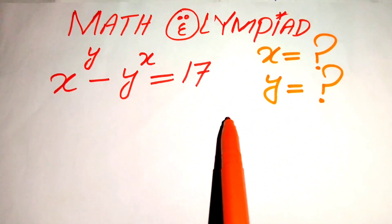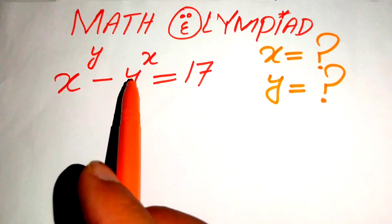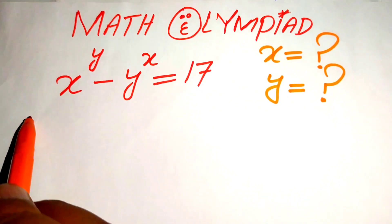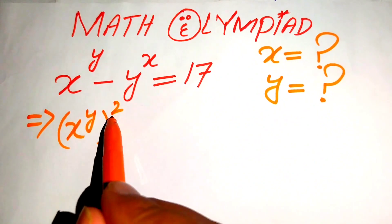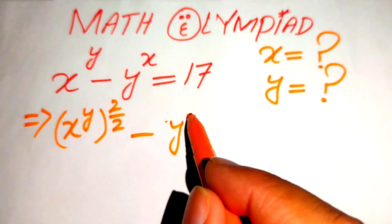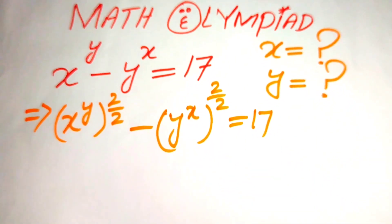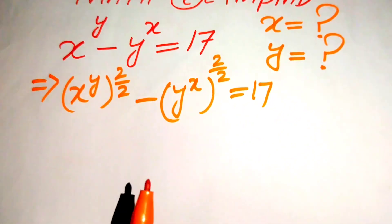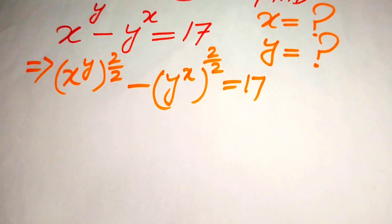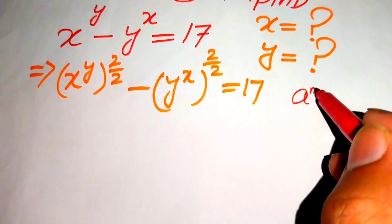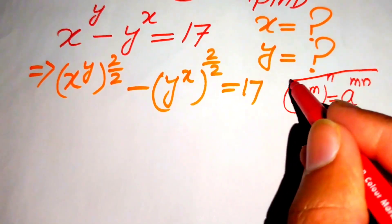The very first step we are going to do is multiply and divide the exponent of both of these terms by 2, so that it will be written as x to the power of y whole power 2 by 2, minus y to the power of x whole power 2 by 2, equals to 17. Now we use the nice exponential law: a to the power of m to the power of n equals a to the power of m times n.